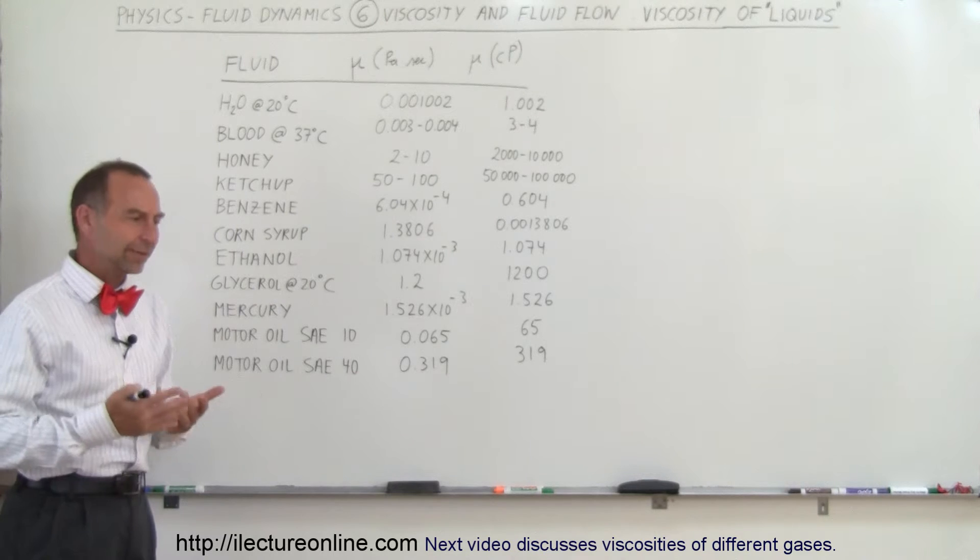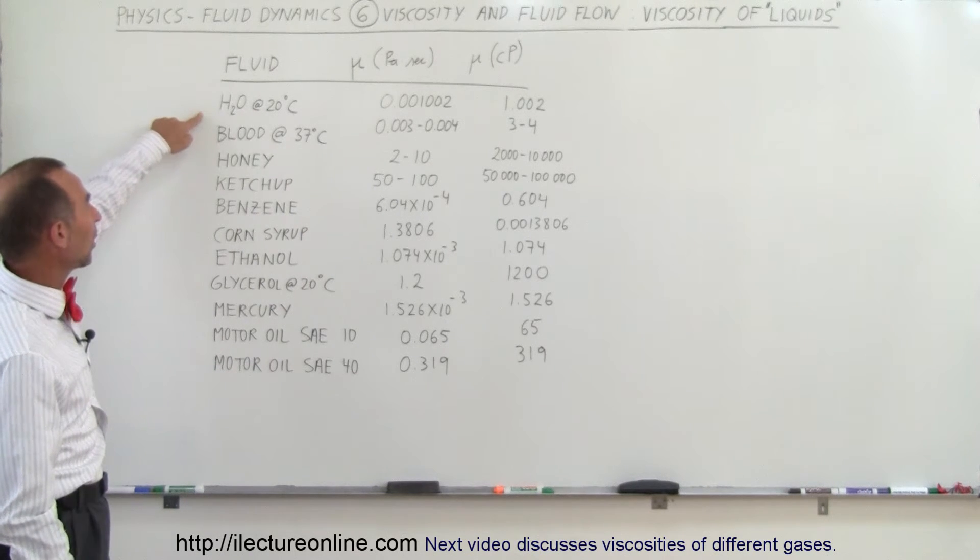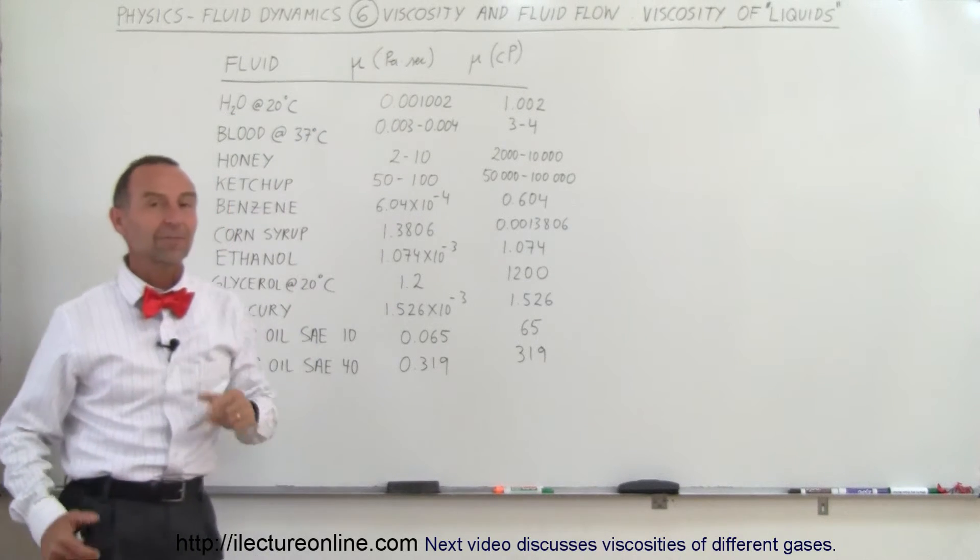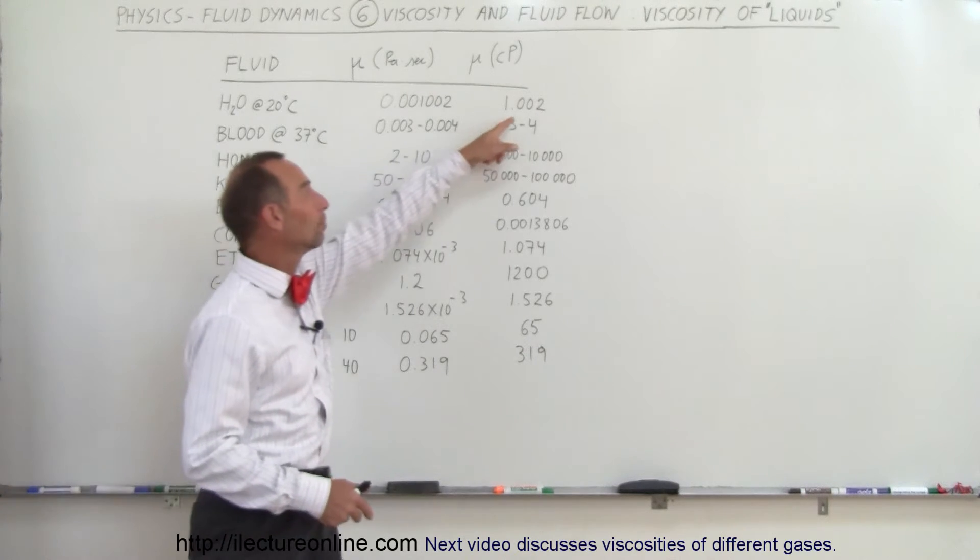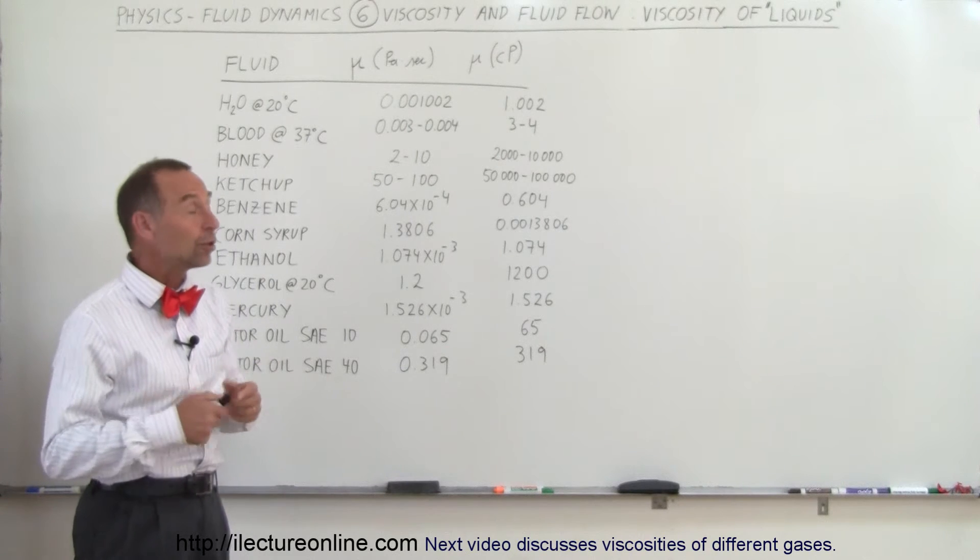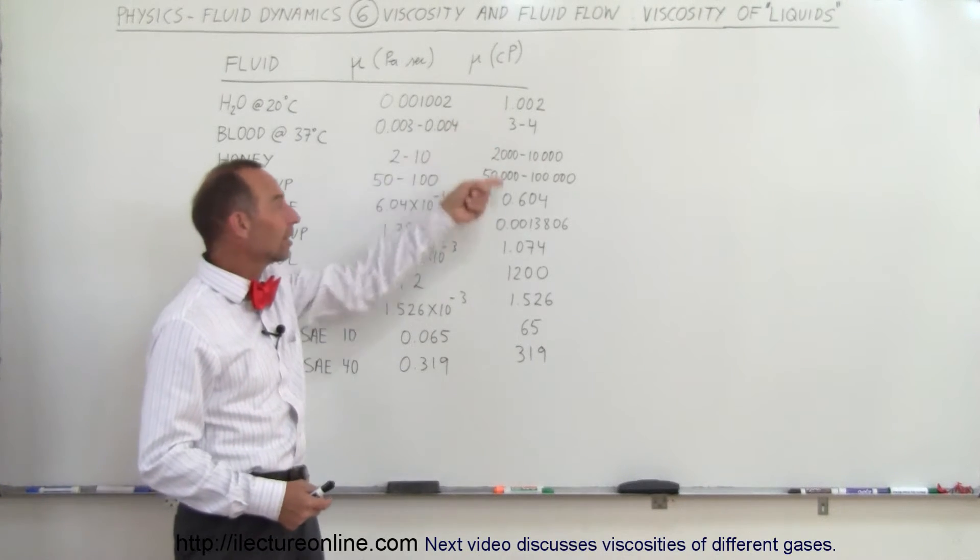Starting with water, everybody's familiar with water. At 20 degrees Centigrade, viscosity is 0.001 pascal-seconds, the standard units, or 1.002 centipoise. Centipoise is a unique unit we like to use for viscosity. For water, it's just about one, so you can easily compare everything else to water.